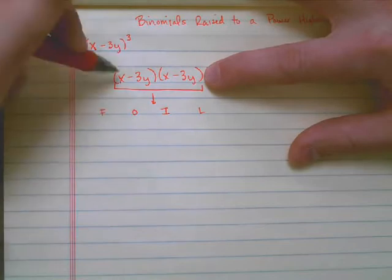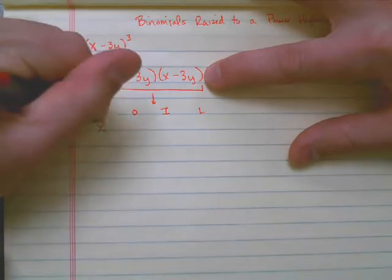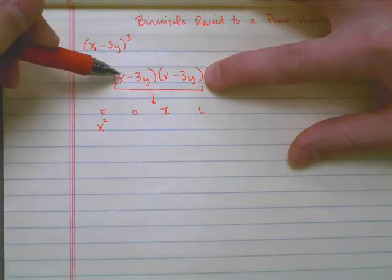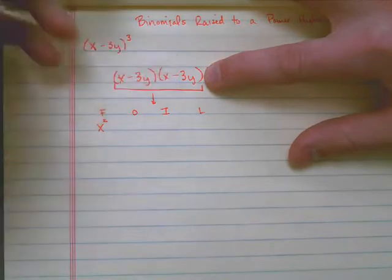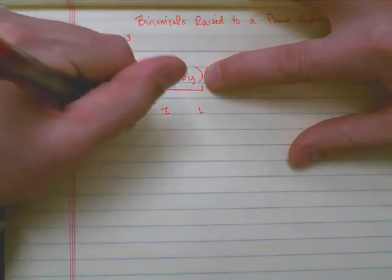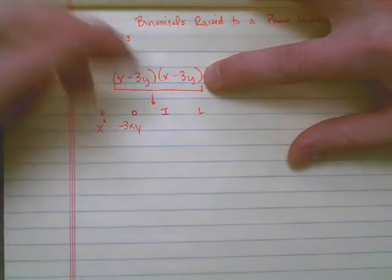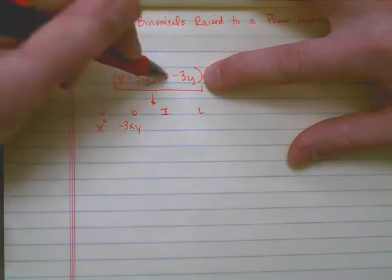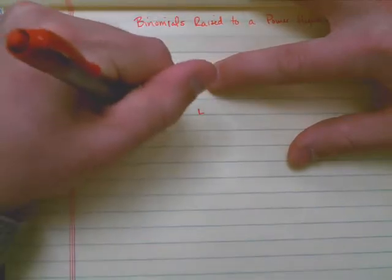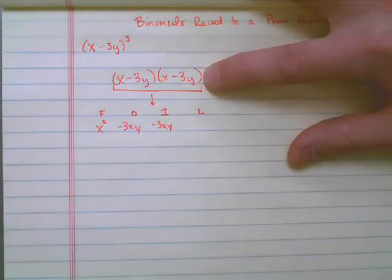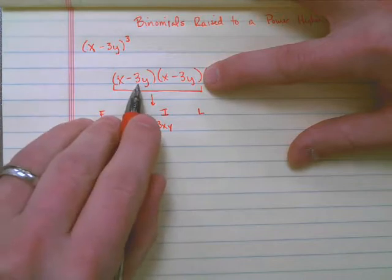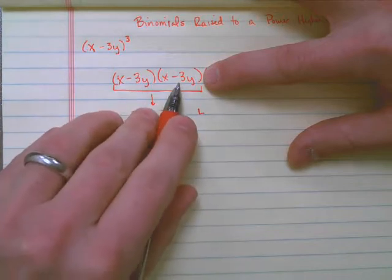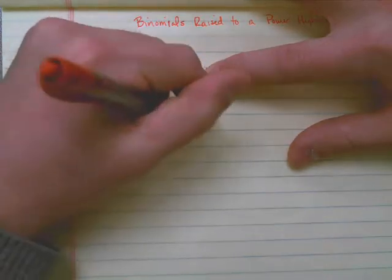First terms, I would take x times x, that gives me x squared. Outer terms would be x and negative 3y, which is minus 3xy. Inner terms would be negative 3y times x, which gives me negative 3xy again. And then the last terms would be negative 3y times negative 3y, which gives me positive 9y squared.